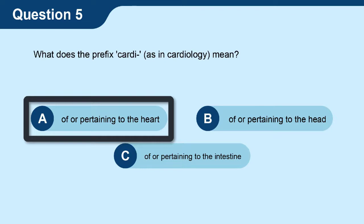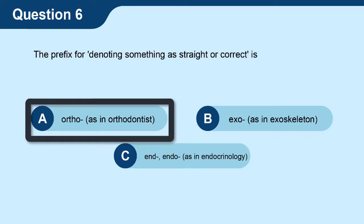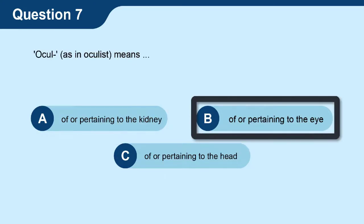Question 5: What does the prefix cardi, as in cardiology, mean? Answer: A — of or pertaining to the heart. Question 6: The prefix for denoting something as straight or correct is? Answer: A — ortho, as in orthodontist. Question 7: Ocul, as in oculus, means? Answer: B — of or pertaining to the eye.